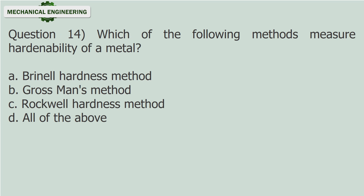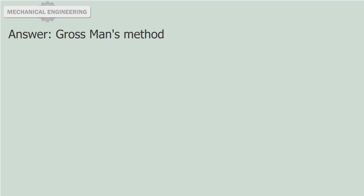Question 14: Which of the following methods measures hardenability of a metal? A. Brinell Hardness Method. B. Grossman's Method. C. Rockwell Hardness Method. D. All of the above. Answer: Grossman's Method.